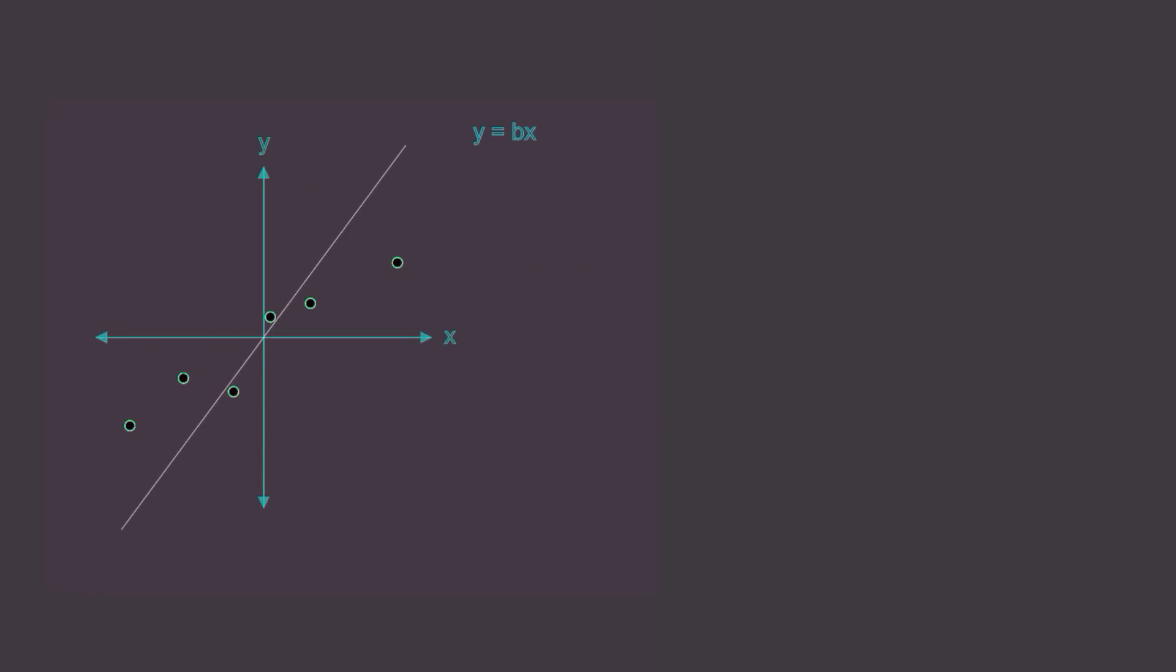Now my question to you is this, what is the best value of b that fits this data? Feel free to play around with this slider yourself until you think you have the best fit. No math is required at this point, just use your intuition. It looks to me like the best fit occurs when b is somewhere between 0.5 and 0.7. Keep that in the back of your mind.